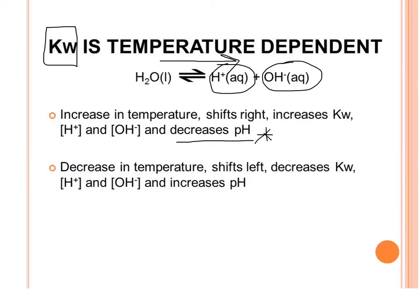The opposite happens if we decrease temperature—it shifts towards the left, decreasing the concentrations of H⁺ and OH⁻, therefore decreasing Kw and effectively increasing the pH.